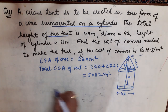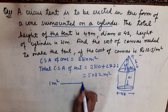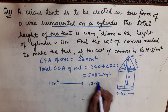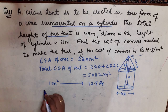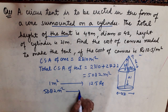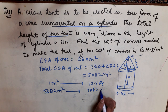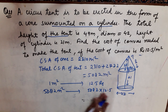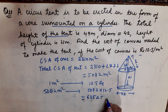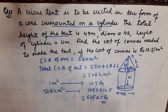For 1 meter square the cost is 12.5 rupees. So for 5082 meter square, the cost will be 5082 × 12.5, which equals 63,525 rupees. So 63,525 rupees will be the answer.